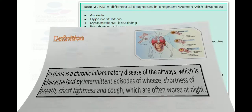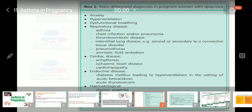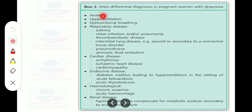This is Box 2 of the TOGS article on asthma in pregnancy, showing the main differential diagnoses in pregnant women presenting with dyspnea. When a patient comes with dyspnea, we must keep these differentials in mind: anxiety, hyperventilation, dysfunctional breathing, respiratory disease including asthma, chest infection, or pneumonia. She may also have rheumatic disease, interstitial lung disease such as sarcoid, or secondary to connective tissue disorder.